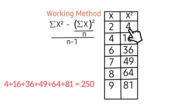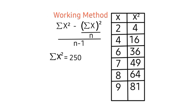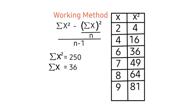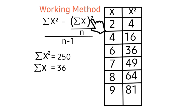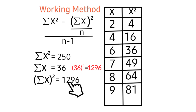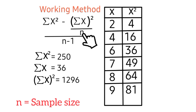4 plus 16 plus the remaining values gives 250. Now we have summation x, meaning we'll sum up all these values: 2 plus 4 plus 6 plus the rest gives 36. Looking at our formula, we have the square of summation x, so we're expected to square this value. The square of 36 gives 1296. We also have n, which simply implies the sample size.